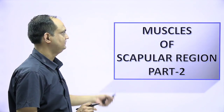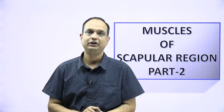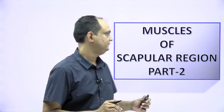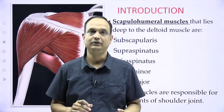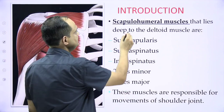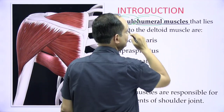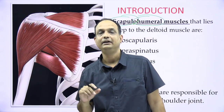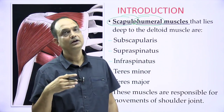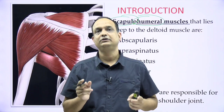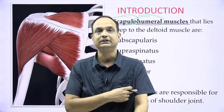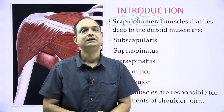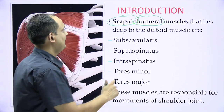Hello students, today we will discuss the muscles of the scapular region, part two. In part one I told you about the deltoid muscle. Today we will see the muscles which lie deep to the deltoid. These muscles are also known as scapulohumeral muscles because they are responsible for the movement of the shoulder joint and they connect the scapula to the humerus.